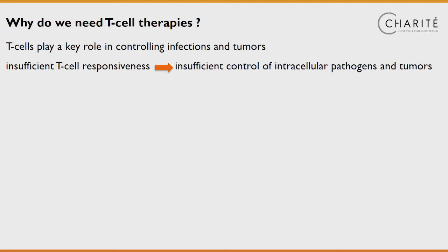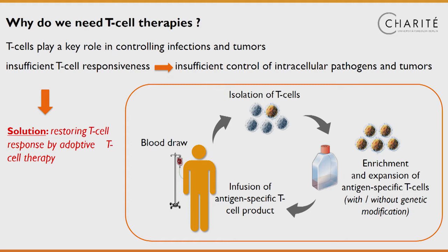An insufficient T-cell responsiveness results in insufficient control of intracellular pathogens. One solution may be the adoptive T-cell transfer, which comprises the isolation of T-cells and the subsequent enrichment and expansion of antigen-specific, viral antigen-specific T-cells, and eventually infusing those cells back into the patients.